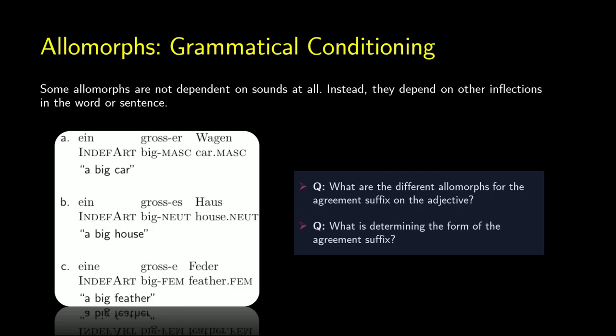There are also cases where the allomorph isn't dependent on sounds or specific words but on grammar — called grammatical conditioning. Languages with gender show this quite a bit. In German, 'a big car' (masculine), 'a big house' (neuter), 'a big feather' (feminine) — the gender of the noun affects the form that appears on the adjective. If 'Wagen' is masculine, 'grosser' is masculine; if 'Haus' is neuter, the morpheme on 'big' is neuter; if the noun is feminine, the affix on 'big' is also feminine. That's called grammatical conditioning.